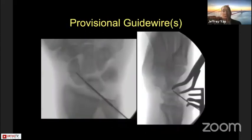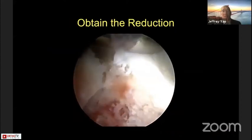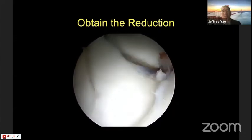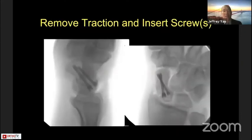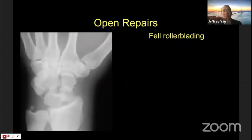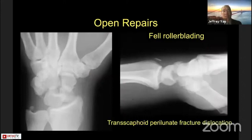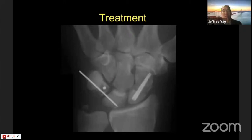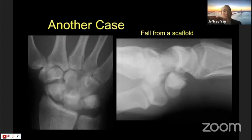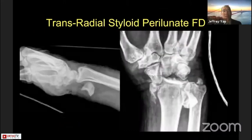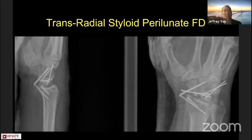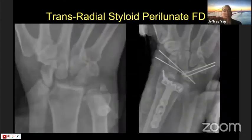We place a K-wire provisionally in the proximal pole, then arthroscopically reduce the proximal pole to the distal pole. Once adequately reduced, we advance guide wires across — in this case I used two screws to fix this fracture, though one can suffice. Here is another trans-scaphoid perilunate where we fixed both the ligament and the scaphoid. We can encounter all different variants: trans-scaphoid trans-capitate perilunate requiring scaphoid and capitate fixation, trans-radial styloid perilunate with complete lunate dislocation treated with radial styloid fixation and pinning.